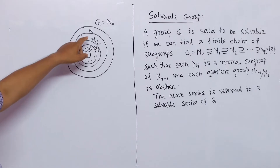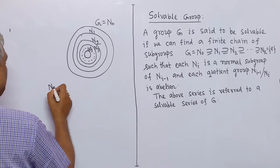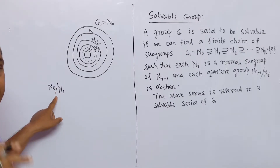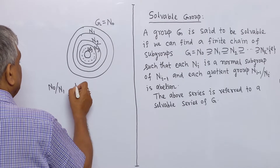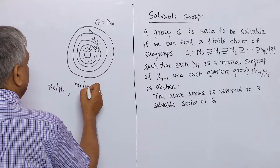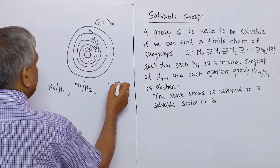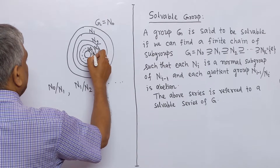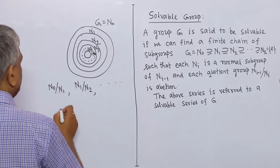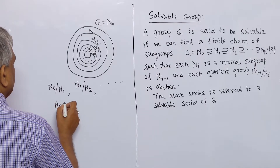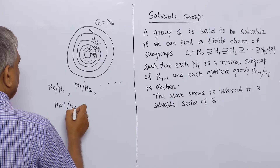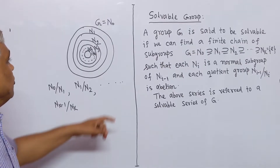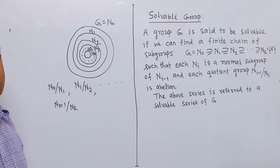And if the quotient group N₀ by N₁ is abelian, similarly the quotient group N₁ by N₂ is abelian, and lastly N_{k-1} by N_k is abelian — this quotient group is abelian — then group G is called a solvable group.